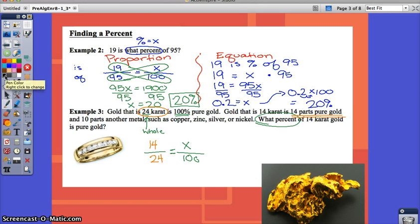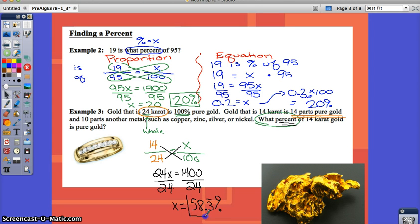Once you have your proportion set up, you can cross multiply. 24 times x is 24x. 14 times 100, again, that's just easy. We can add the two zeros right on. It's going to be 1,400. And then divide by 24. You use your calculator here. Find the answer for me. X is going to be... And then remember, we were asked to find what percent. So, your answer must have a percent symbol on it. 1,400 divided by 24 is 58 and 3 tenths. 3 tenths repeat... Well, actually, it's 3 repeating. So, 58.3 repeating percent.